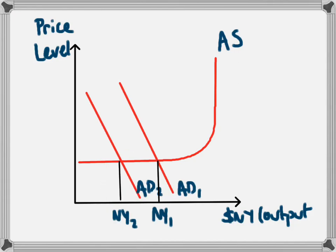If the economy was at one of the very low levels of national income, a contractionary policy would lead to a decrease in aggregate demand from AD1 to AD2, and national income would fall from NY1 to NY2, but this would not have an effect on the price level.